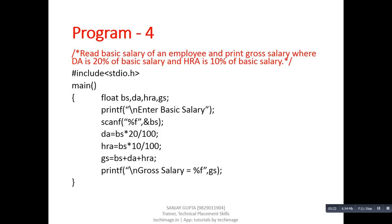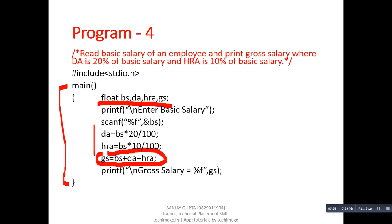The complete program is inside the main function. For calculation we use float type variables. The printf statement shows 'enter basic salary' and scanf reads the value of basic salary. Then two statements calculate DA and HRA. After that, basic salary is added with DA and HRA to get gross salary. Finally, the printf statement prints the gross salary, where %f is replaced by the variable gs.